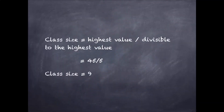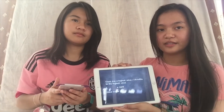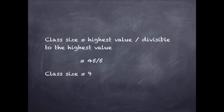Next is the class size. Class size is the one who determines how many rows we are going to have. The formula for class size is highest value over the divisible number to the highest value, which is 45 over 5, which equals 9.